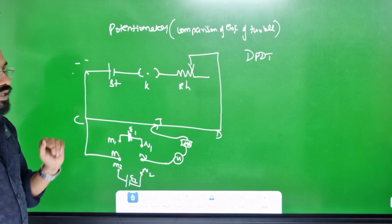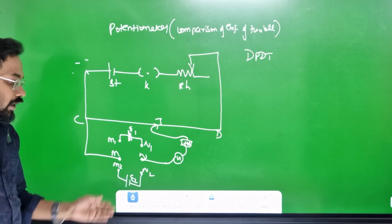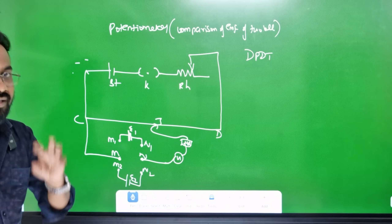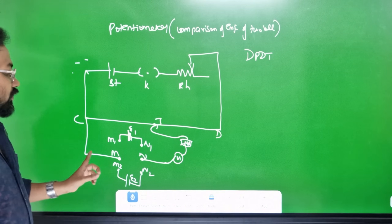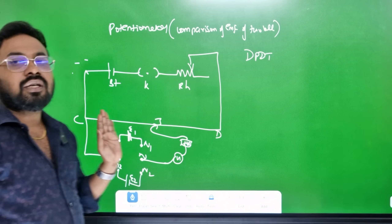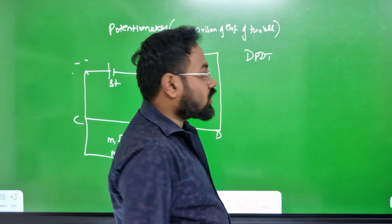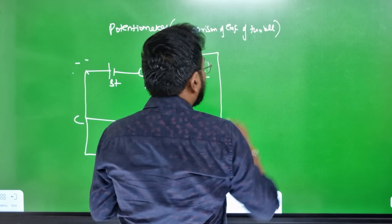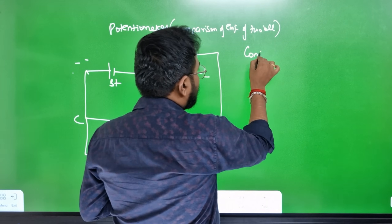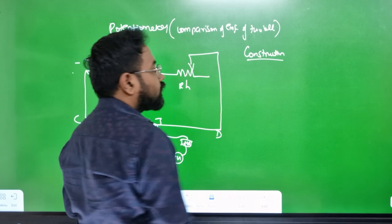E1 is the EMF of the first cell, connected between M1 and N1. E2 is the EMF of another cell, connected between M2 and N2. This completes the construction or experimental arrangement of the potentiometer for comparing EMFs.